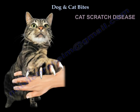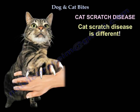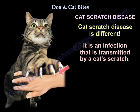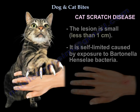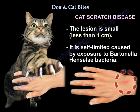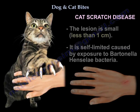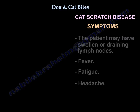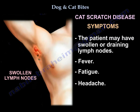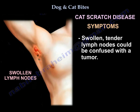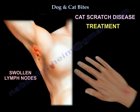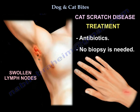Cat scratch disease is a different entity — it is an infection transmitted by cat scratch. The lesion is small, less than 1 cm, and is self-limited, caused by Bartonella henselae bacteria. The lesion may present with swollen or draining lymph nodes, fever, fatigue, and headache. The swollen tender lymph node can be confused with a tumor. Treatment is usually antibiotics and no biopsy is needed.